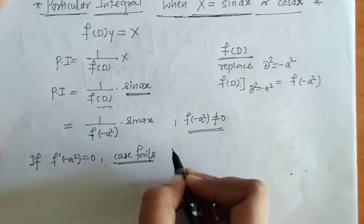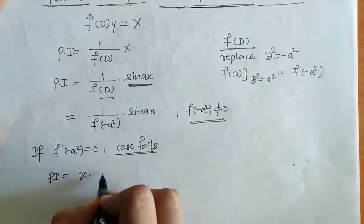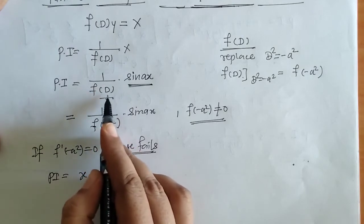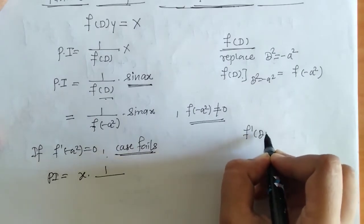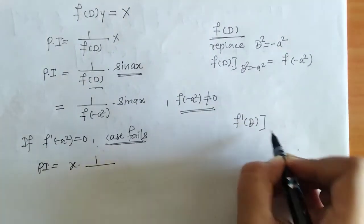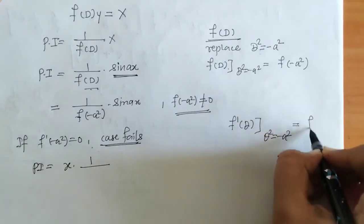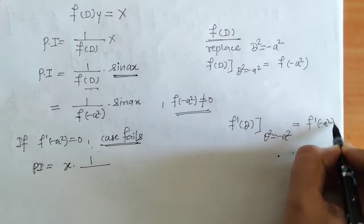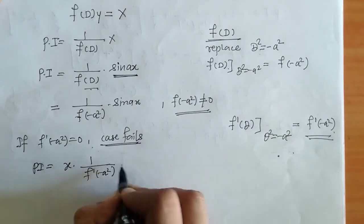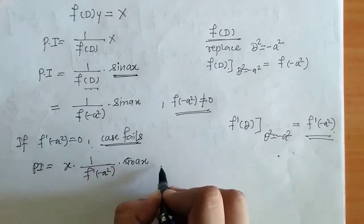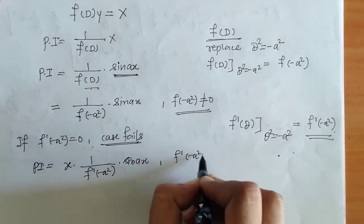In that case, what will PI be? We have to multiply by x and take the derivative of f(D). So we have the derivative f'(D), and again we have to replace D² equals to minus a², so that we get f'(-a²) in the denominator. We then write f'(-a²) with sin(ax) as it is. Again the condition is that this denominator should not be zero.